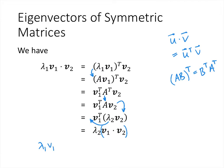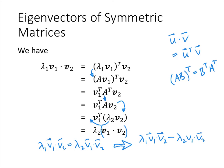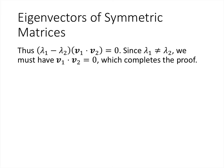So the result is that lambda 1 times v1 dot v2 equals lambda 2 times v1 dot v2. Subtracting lambda 2 v1 dot v2 from both sides gives lambda 1 minus lambda 2 times v1 dot v2 equals 0. That's two scalars multiplied together equaling 0, so one must be 0. Since lambda 1 and lambda 2 are distinct, lambda 1 minus lambda 2 is not zero, so it must be that v1 dot v2 equals 0 — exactly what we needed to show that v1 and v2 are orthogonal.